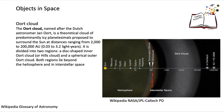The Oort cloud lies just beyond the solar system, outside the heliosphere — the region of the Sun's influence. It is quite a deep body, extending roughly two-thirds of the radius of the solar system.